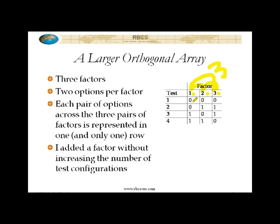Let's go through each of the possible pairs of factors and satisfy ourselves that every possible pair of options is present. We have two options per factor, zero and one, so we should find the same four combinations that we found on the previous slide, not necessarily in the exact same rows, but they should be there in some row. Starting with factors one and two: zero-zero, zero-one, one-zero, one-one. Cool, there it is.